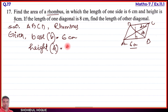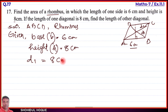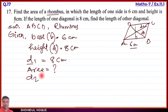The diagonal d1 equals 8 centimeters as given. Now we need to find d2. First, let us find the area, so area equals question mark. Then we need to find d2, so d2 equals question mark. Keep in mind the formulas for the area of a rhombus.